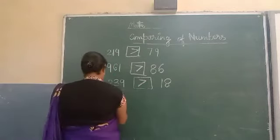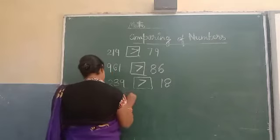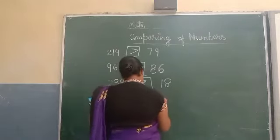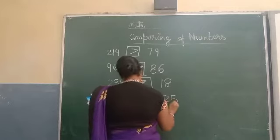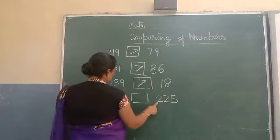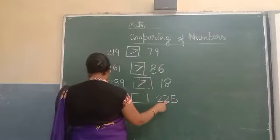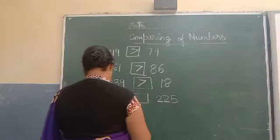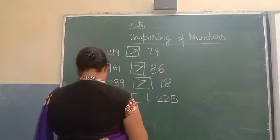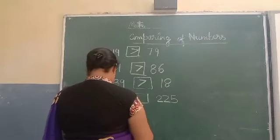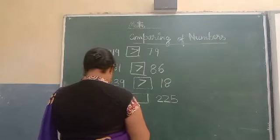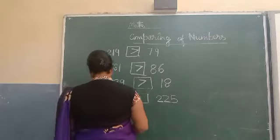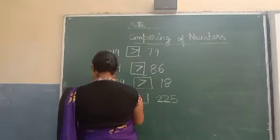Here 90 is less than 224. So put less than here. You can see 90 is more than 80, so you will put greater than 80.